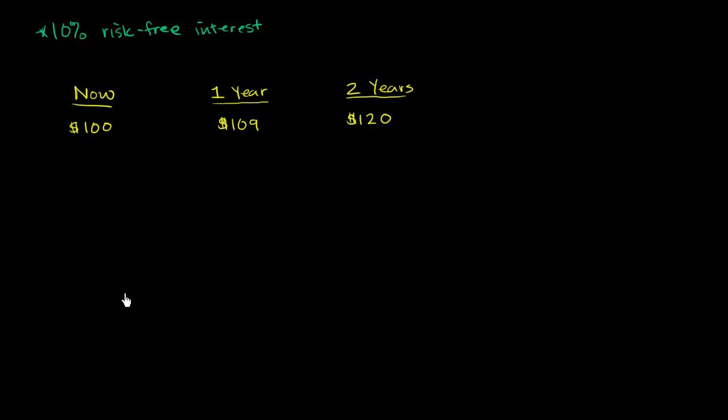And if you wanted to compare them directly, the thought process would be, well, let's see, if I took option one, if I got the $100, and if you were to put it in the bank, what would that grow to based on that 10% risk-free interest? Well, after one year, 10% of $100 is $10. So you would get $10 in interest. So after one year, your entire savings in the bank will now be $110.